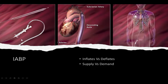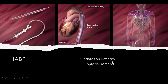Quick review of the Intra-Aortic Balloon Pump. The balloon gets inserted via your femoral artery, gets advanced up the descending aorta, and sits right below the subclavian artery. Once it gets to the heart, it inflates and deflates constantly.